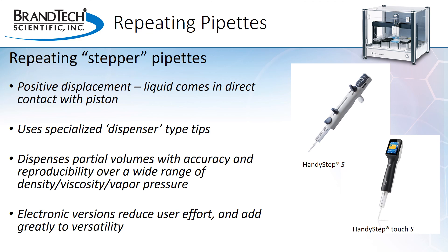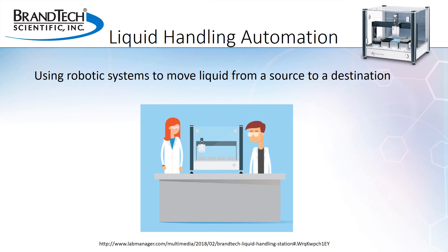So that covers the most common tools for handheld liquid handling. Now I'm going to turn over the presentation to Stephanie to have a discussion of automated liquid handling. Thank you, Nancy, for the excellent explanation of air displacement and positive displacement pipettes. So now that we've talked about manual and electronic handheld devices used to move liquids, let's talk about automated liquid handling. Liquid handling automation differs from handheld pipetting in that it uses a robotic system to move liquid from a source to a destination.